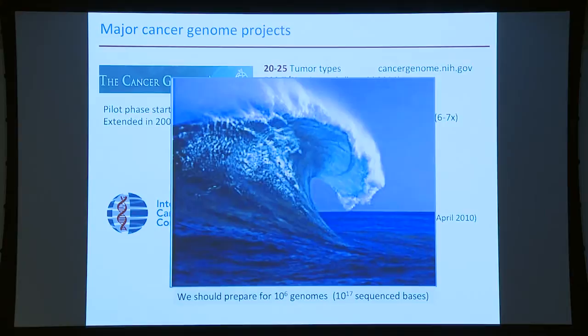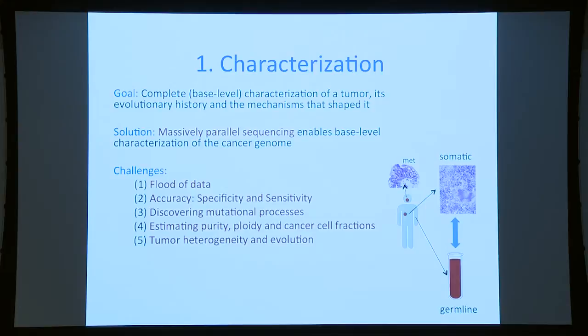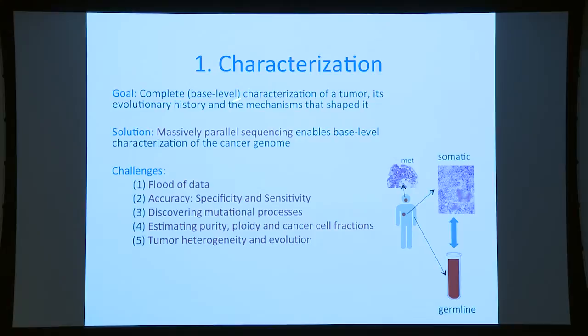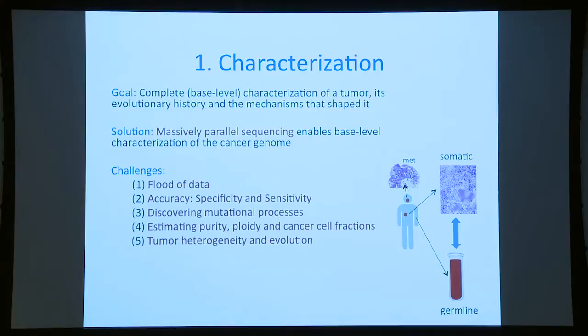We should expect a flood of data from these projects, and as this technology comes into the clinic, we'll have more gene panels, exomes, and genomes being sequenced — we would expect to see millions of genomes with an extremely large number of sequence bases. The goal of characterization is to get complete base-level characterization of a tumor, to understand the exact genome. Ideally, we would know the exact sequence of the genome in every cancer cell — that's still not reality, but that's where we'd like to head.